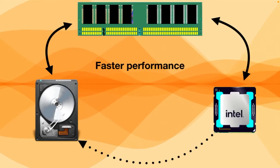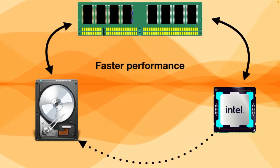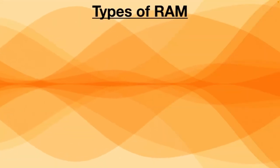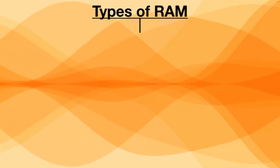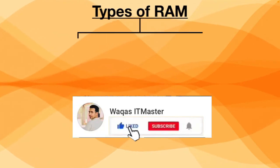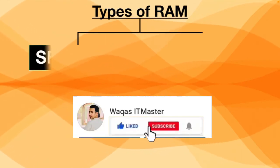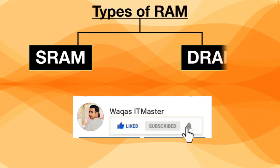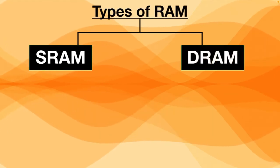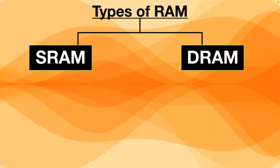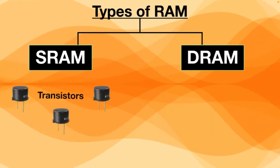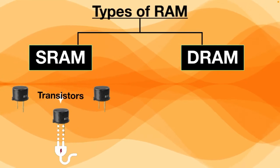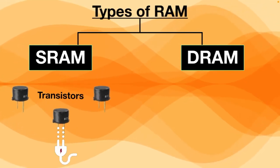Let's talk about the types of RAM. There are two main types: SRAM (Static Random Access Memory) and DRAM (Dynamic Random Access Memory). In SRAM, data is stored in transistors and uses low power constantly to keep data fresh.